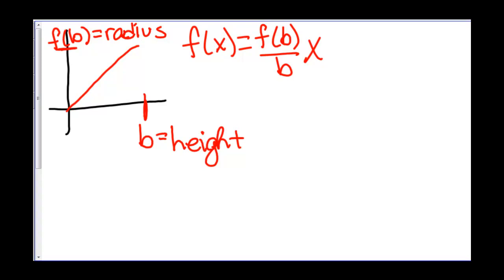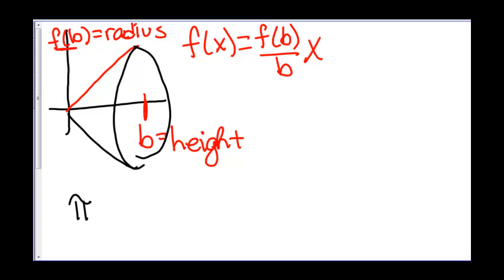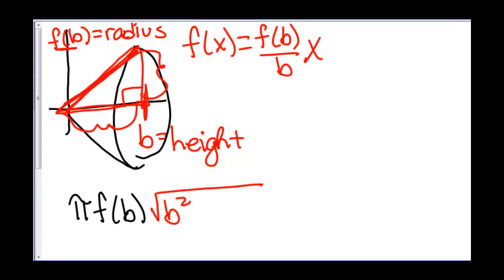And now, using this, we know that the surface area of a cone — which will be formed when this line is revolved around the x-axis — is π times the radius, which is f of b, times the length of this line. So forming a right triangle, we can find that the length of that line is the square root of b squared plus f of b squared.